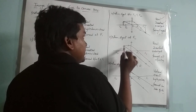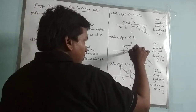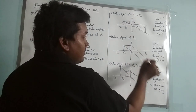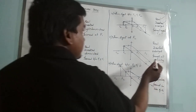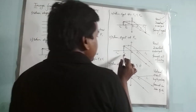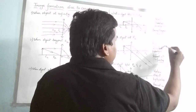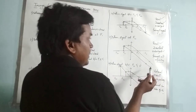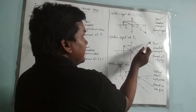When the object is at F2: two rays are considered. A ray parallel to the principal axis will pass through the focus, and a ray passing through the optical center will go undeviated. These two refracted rays are parallel and do not meet anywhere. So we consider that when the object is at focus, the image will be at infinity. This is the opposite of the first case, where the object was at infinity and the image was at F1. Here the object is at focus and the image is at infinity — it is a real, inverted, and enlarged image formed at infinity.